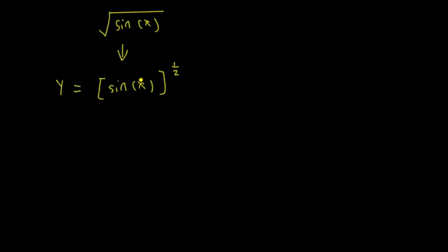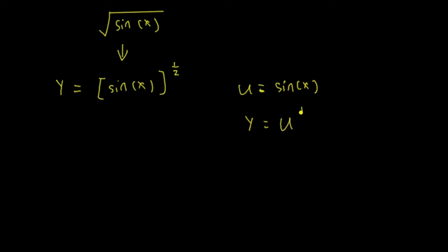We let y equal to this function, sin to the power of 1 half. To use the chain rule, let u equal to sin. Then y must be equal to u to the power of 1 half, because sin is u now — so this is u to the 1 half.